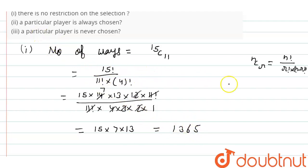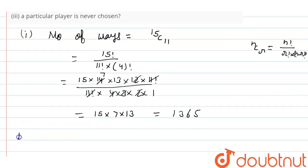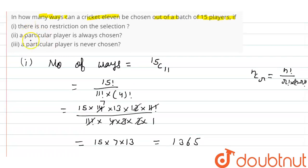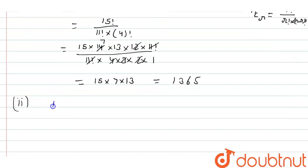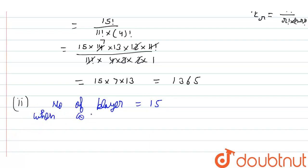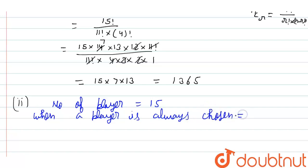Now let's come to option two. In option two, a particular player is always chosen. The total number of players is 15. When a particular player is always chosen, that player is already fixed in the team.